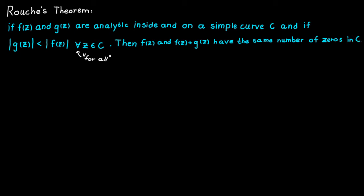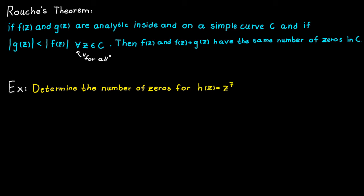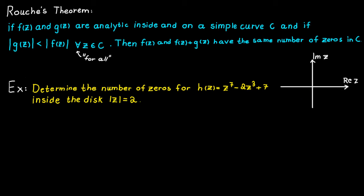This theorem can be quite useful when we want to determine the number of zeros for a function inside a region. So let's do an example to get a feeling for how to use it properly. Let's say we want to determine the number of zeros for the function h inside the region where the absolute value of z is equal to 2, which we can illustrate as a circle centered at the origin with a radius of 2.